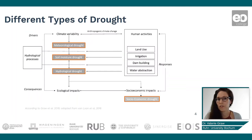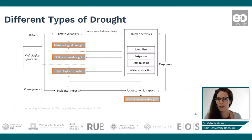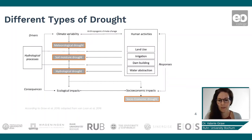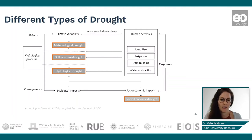If you have a lack of rainfall and you irrigate your field, you can actually improve the situation compared to if you only had a rain-fed agricultural field. And of course with socioeconomic drought, when it really comes to the impact, you have decreasing yields and lower food availability for the population.